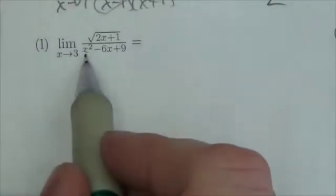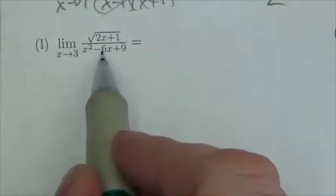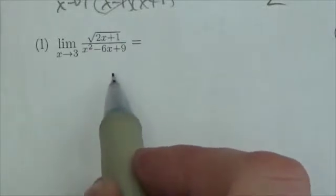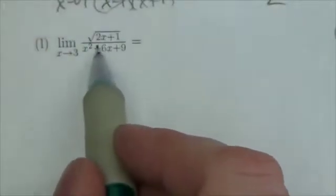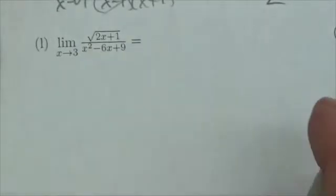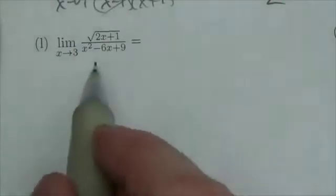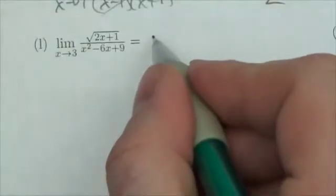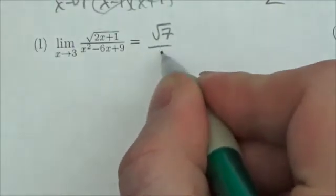If you plug 3 into the denominator, you get 3 squared is 9, minus 6 times 3. Well 6 times 3 is going to be negative 18. So this is minus 18. 9 minus 18 plus 9. Well the denominator is going to 0. So this is actually going to become root 7 over 0.